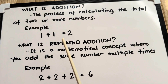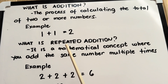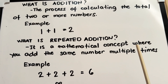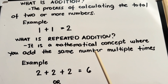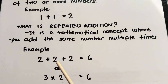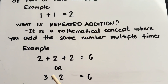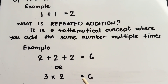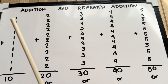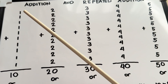Now, what is repeated addition? It is a mathematical concept where you add the same number multiple times. Example, 2 plus 2 plus 2 is equals to 6. Or, 3 times 2 is equals to 6. Let's try examples of addition and repeated addition. Let's begin.